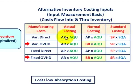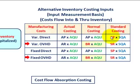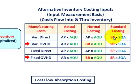For actual costing, we take the actual rate or price for those manufacturing input costs times the actual quantity used for the period. For standard costing, we take a standard price or rate for those manufacturing costs times a standard quantity allowed. Standard costing sets predetermined amounts for both the price or rate paid and the standard quantity allowed for each manufacturing cost.